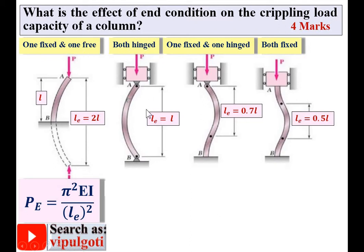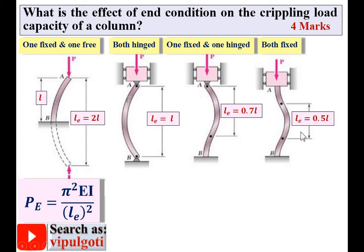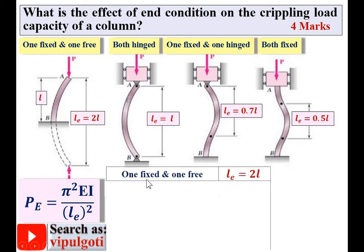In case two, the effective length is exactly equal to the actual length. In case three, the effective length is 0.7 times the actual length — the actual length runs from end to end, and the effective length is 0.7 times that. In case four, the effective length is half of the actual length. This can be summarized in a table.